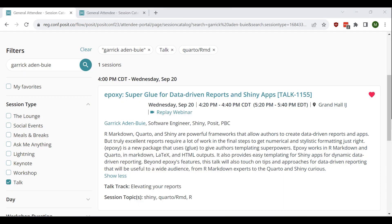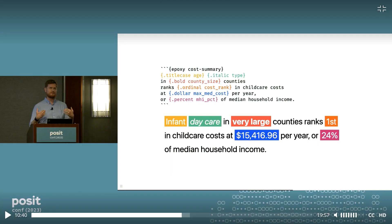Garrick Adenbui gave a talk on a new package he's been developing called epoxy. The package uses glue and provides awesome formatting that makes parameterized reporting using Quarto or R Markdown much easier. It can also be used in Shiny apps or in regular R scripts.